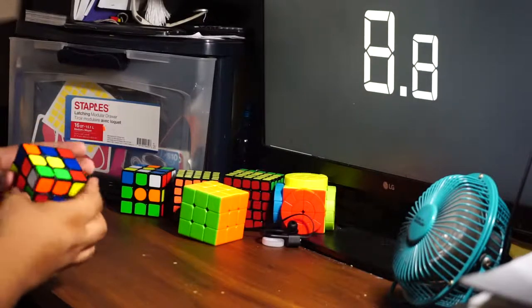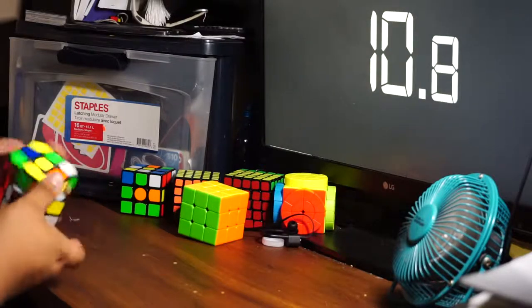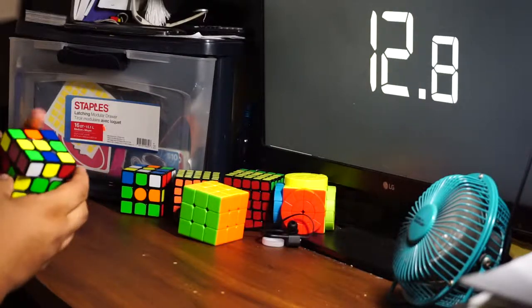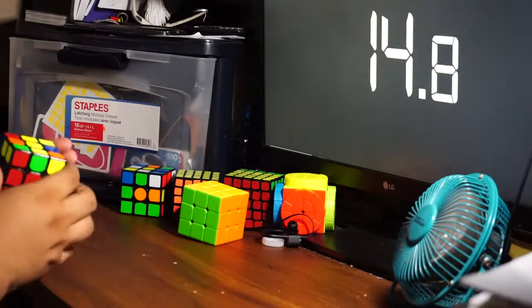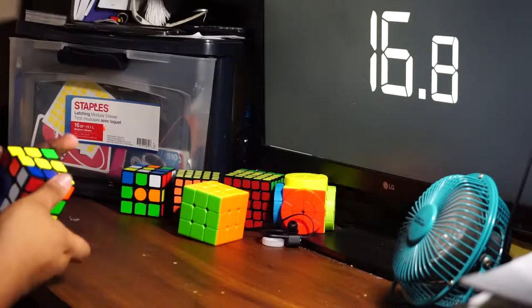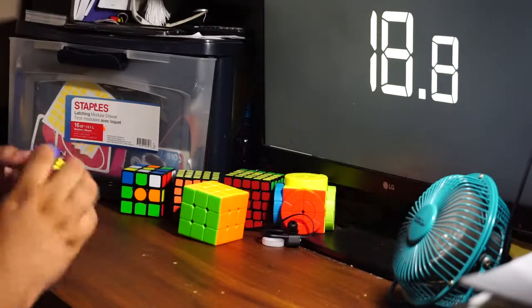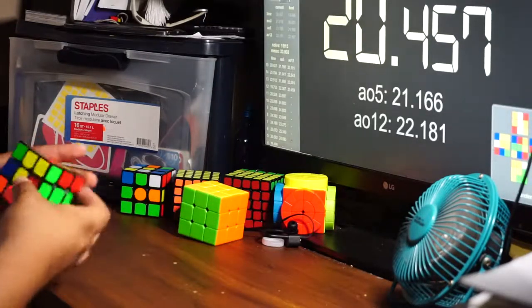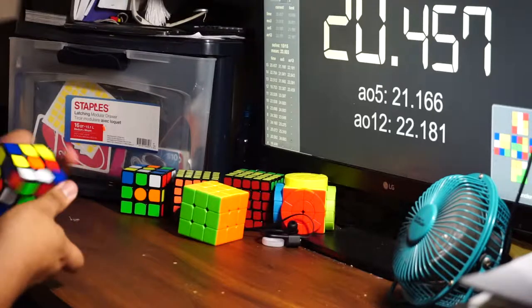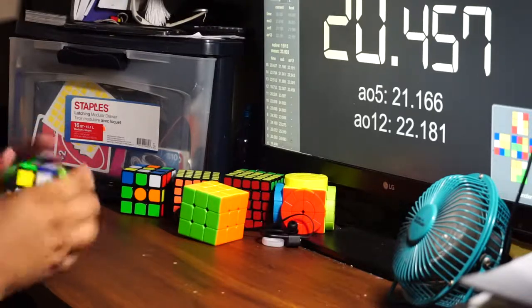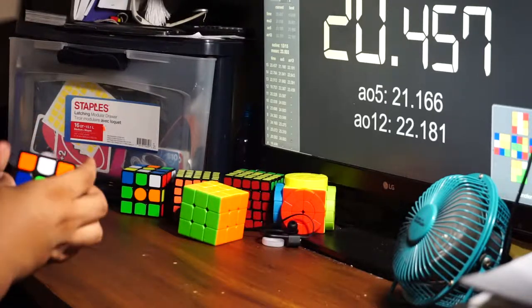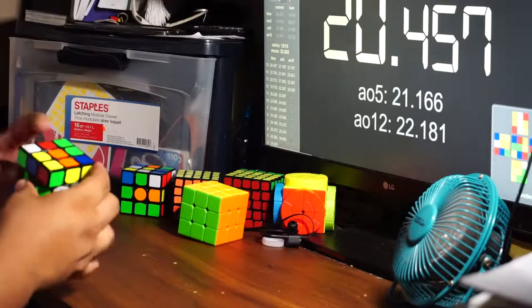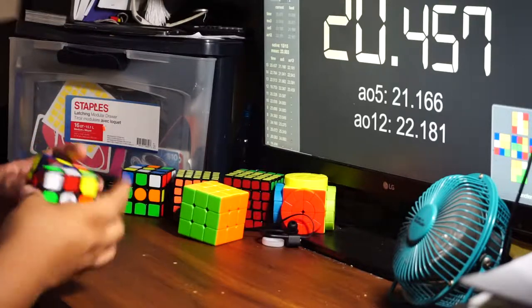So with the YJ MGC, I was able to set it up to the settings that I really liked. Not too fast, not too slow, just right for me. And here are a couple of solves that I'm doing. As you can see, some of them I'm doing pretty good. I'm averaging at 22 seconds at about some 19, some 18s, and it's actually staying at the 20 range, which is pretty cool.